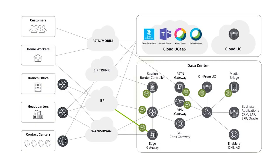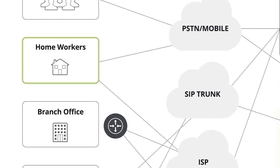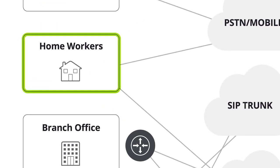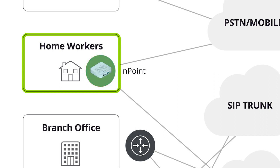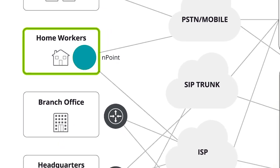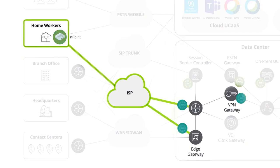One more point for the home worker: instrumenting smart data at the home worker location itself may well not be practical, but that's where synthetics come into play. Ingenious Pulse, leveraging endpoints deployed on the home worker PCs, can give insight into the performance of services including UC from the home worker's perspective. Whether using synthetics or smart data, correlating the home workers with their ISP connectivity provides IT with the perspective of the performance of the different ISPs involved and can go a long way to understanding general ISP performance.